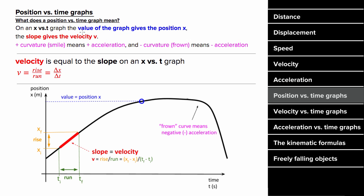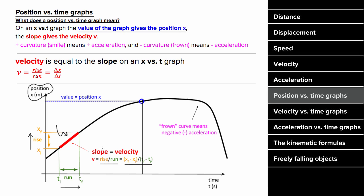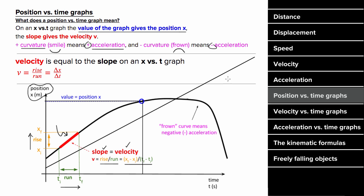How do you interpret a position versus time graph? The value of the graph gives you the position x — at some time t, the value on the vertical axis is your position at that moment. The slope equals the velocity of the object, found using rise over run: change in x over change in time, which is displacement per time, equal to velocity. You can also tell if there's acceleration based on curvature: a smiley-face curve represents positive acceleration, a frowny-face curve represents negative acceleration, and constant slope means constant velocity with zero acceleration.